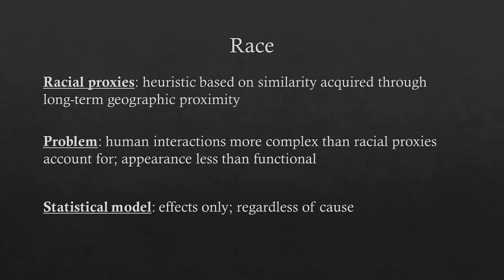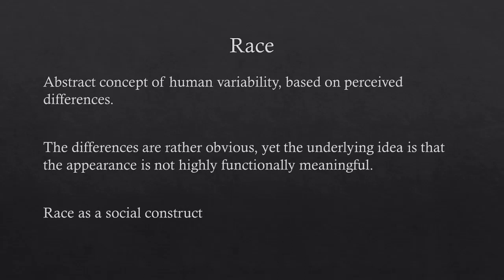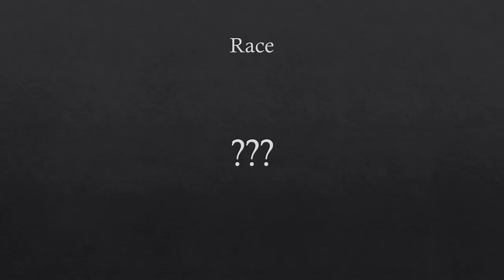If this model is used as a functional tool instead of a moral one — that is, if we do not attribute additional unjustified meaning to the statistics themselves — then the model is rather useful. The statistical model does not attempt to assign characteristics, but only tracks them. That way, it doesn't matter whether the apparent increased likelihood of developing some health problem is related to race, ethnicity, gender, or just socioeconomic circumstances — the data is all that matters. So the idea of race is taken to be an abstract concept of human variability based on perceived differences; the appearance is not highly functionally meaningful.